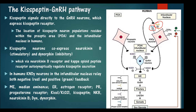The KNDY neuron produces dynorphin and neurokinin B, which activates the kisspeptin neuron. Kisspeptin is released and binds to the GnRH neuron, activating it so that GnRH is released at the median eminence. This represents the process of GnRH release from the hypothalamus.